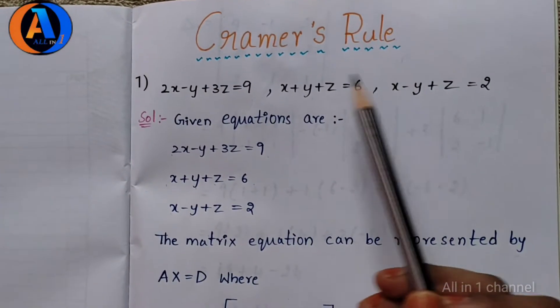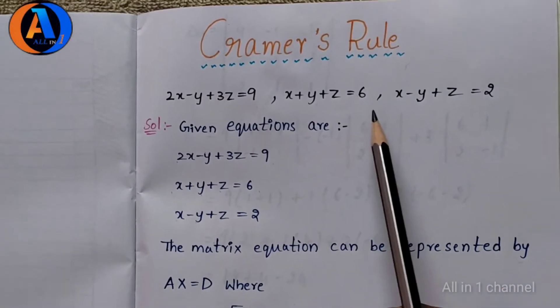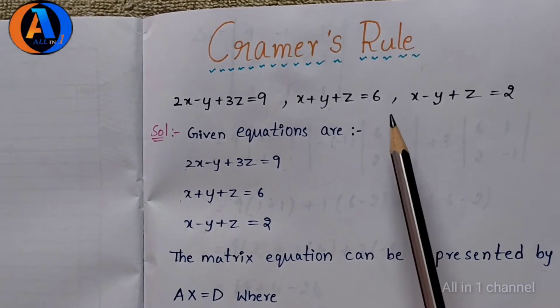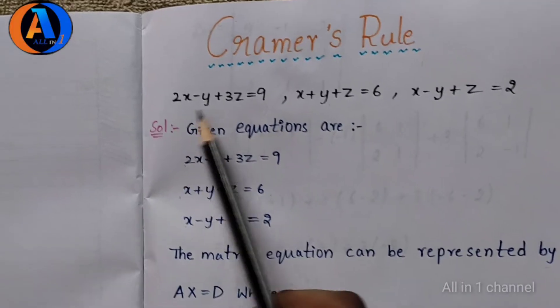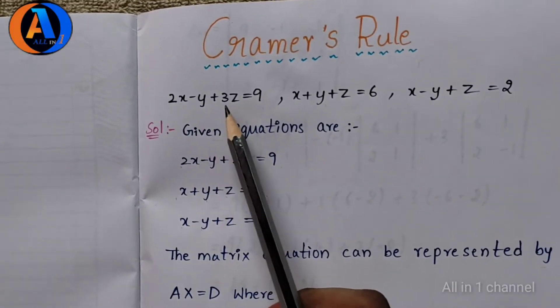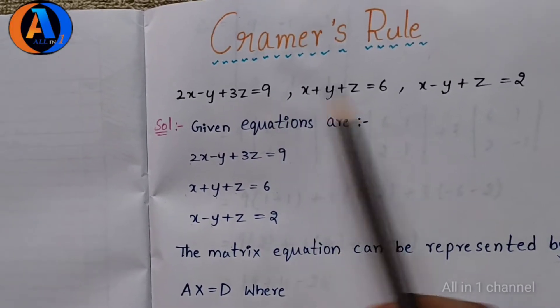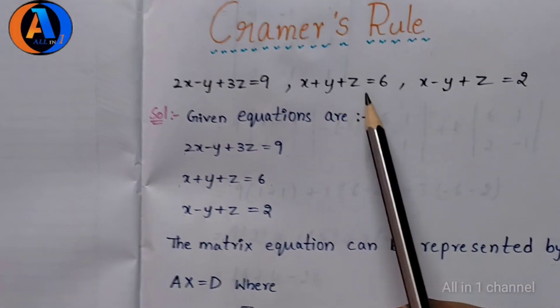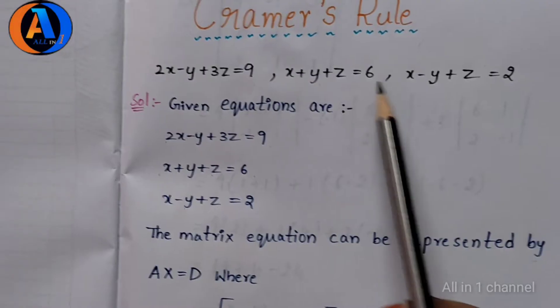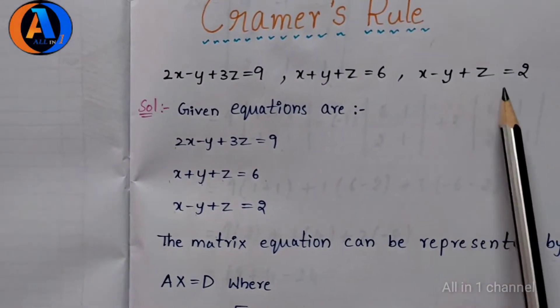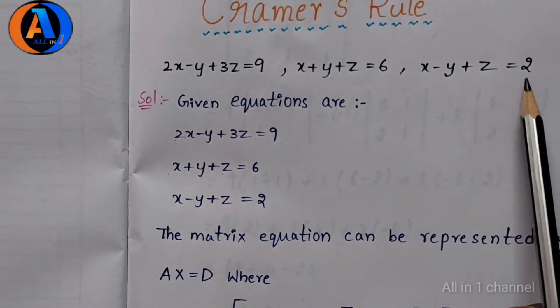Cramer's Rule. Given equations to find solution for x, y, z are: 2x minus y plus 3z equal to 9, x plus y plus z equal to 6, x minus y plus z equal to 2.